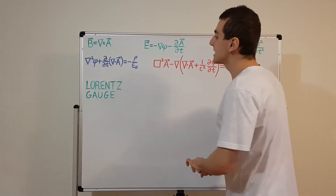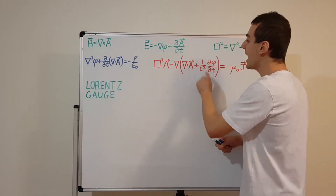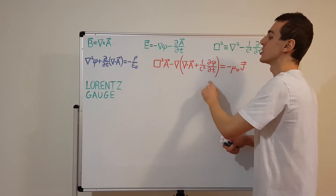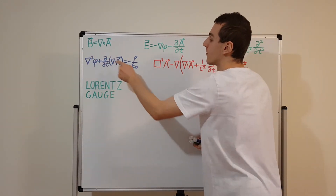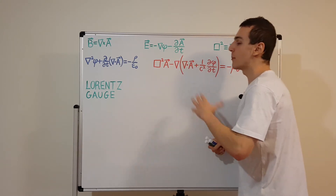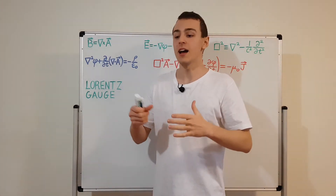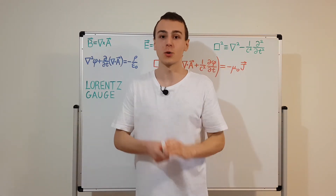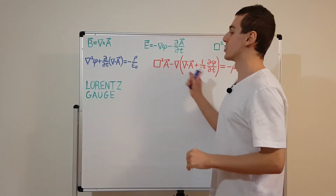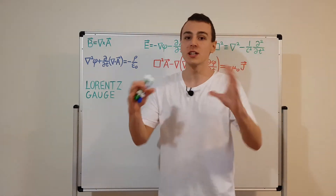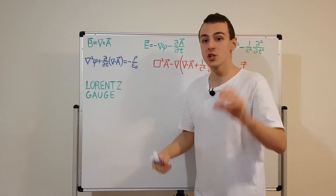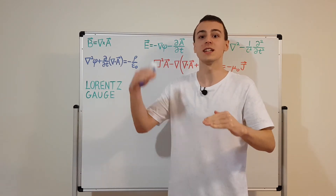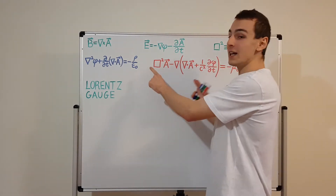Let's examine what's going on. We have second order differential equations — both of these are second order differential equations with second order differential operators acting on phi and A. That is different from Maxwell's equations, which have first order differential operators, making them first order partial differential equations. So we've reduced the number of equations from four to two, but we've increased the order from first to second order, which could make them more complicated to solve.